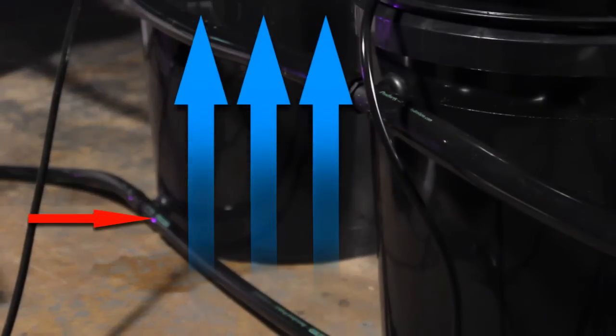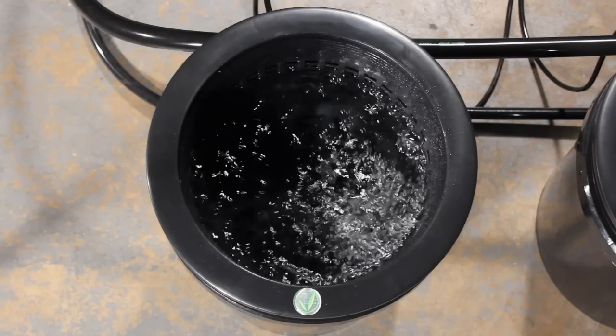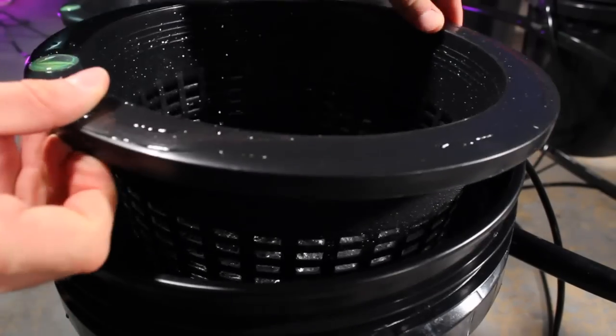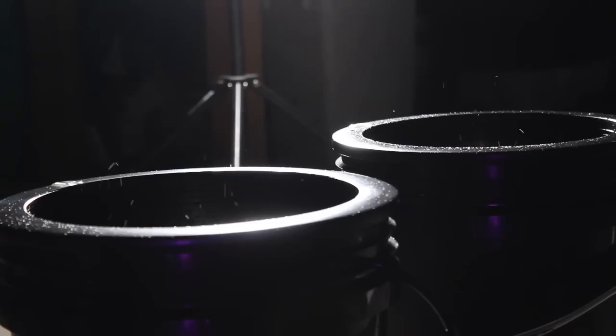The patented flow of water from bottom to top creates even nutrient distribution and prevents common growing issues such as root rot. The snap-in net basket with a 5-gallon bucket gives you plenty of room to grow thick, hardy root systems.